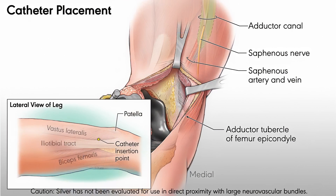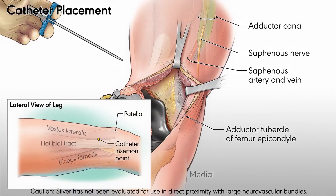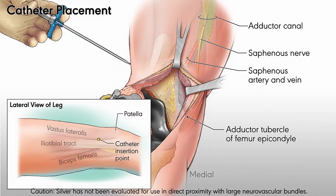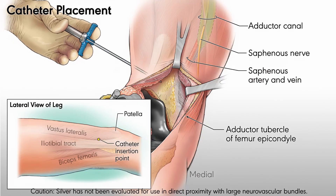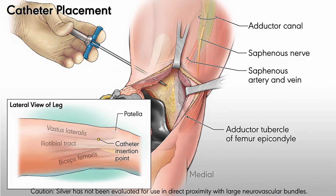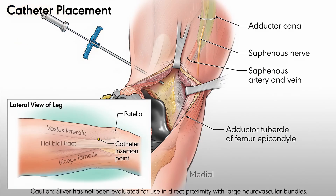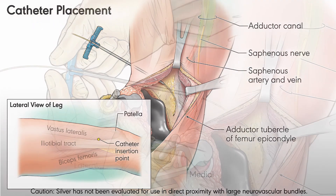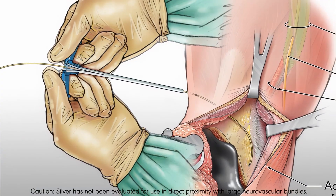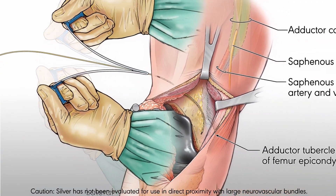To place the catheter, start by inserting the inducer needle and T-peel sheath into the superior lateral aspect of the knee, above the joint and lateral to the superior pole of the patella. Remove the needle and pass the catheter through the T-peel sheath. Peel away and discard the T-peel sheath.